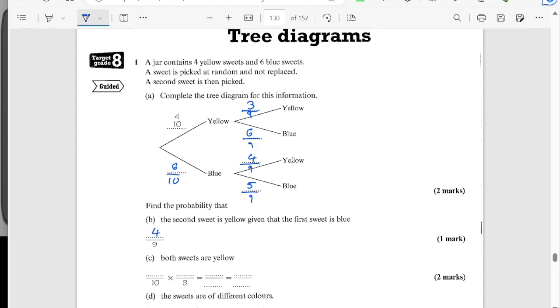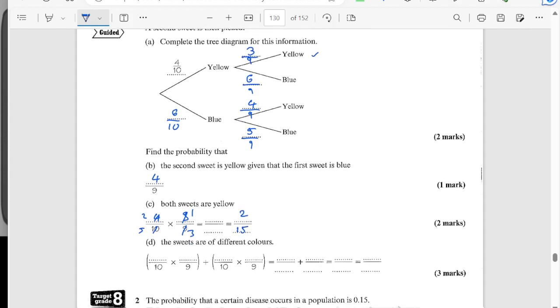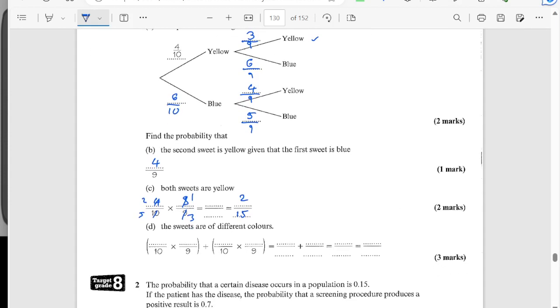Both sweets are yellow. So for both sweets to be yellow that's going to be this branch here so we can find that by multiplying. So we're going to end up with two over fifteen. And I've just checked the answer in the back of the book says four over fifteen so they've not simplified it which is fine but I would strongly recommend you simplify.